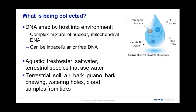From terrestrial environments, samples include soil, air, bark, and guano. There's a paper where ungulates and primates that chewed on bark were detected via saliva. Watering holes and blood samples from ticks or other insects have also been used — essentially any kind of DNA in that particular environment from aquatic or terrestrial habitats.